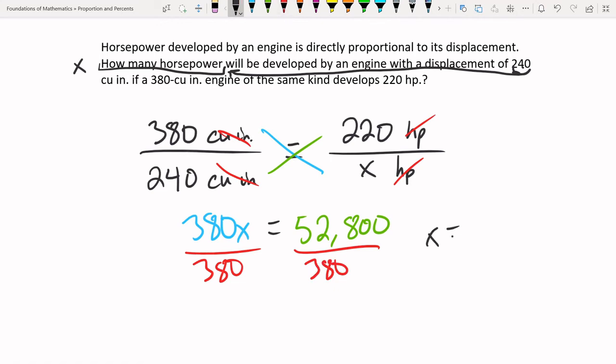We know that X equals 138.95. We're running two decimal places here. And that's going to be in horsepower.